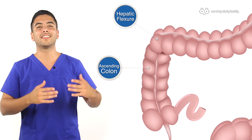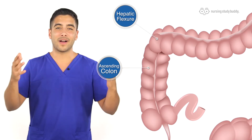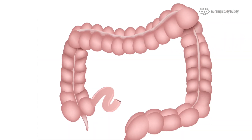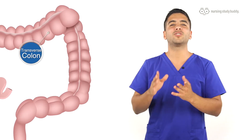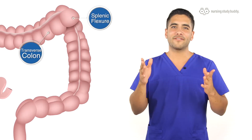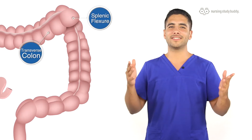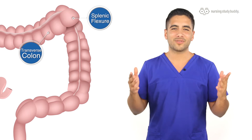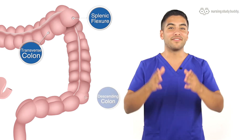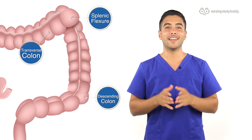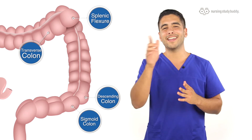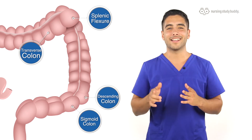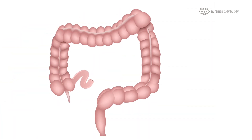The reason they call it the hepatic flexure is because it's right next to the liver — liver, hepatic, that's why it's called that. Then we have our transverse colon, which makes it to our splenic flexure. Splenic flexure — guess what it's next to? That's right, your spleen. Then we have the descending colon and the sigmoid colon, which is easy to remember because it kind of looks like an S. Then we have the rectum and the anus.